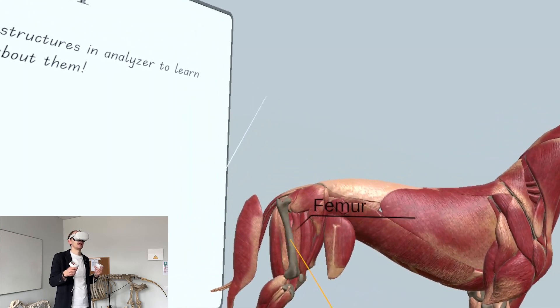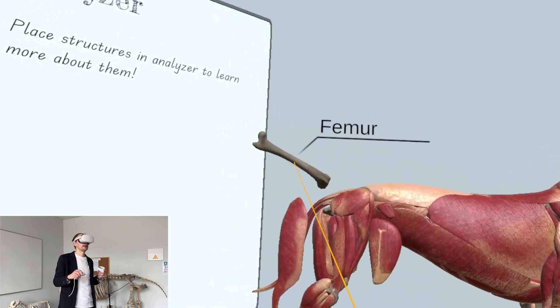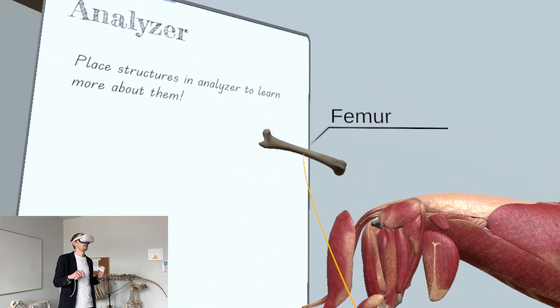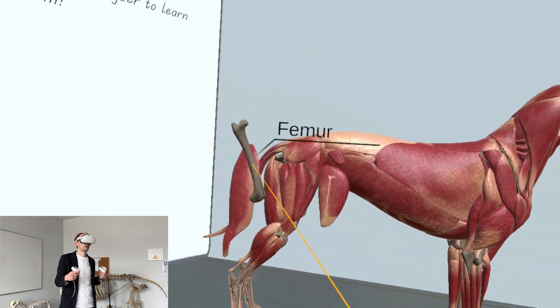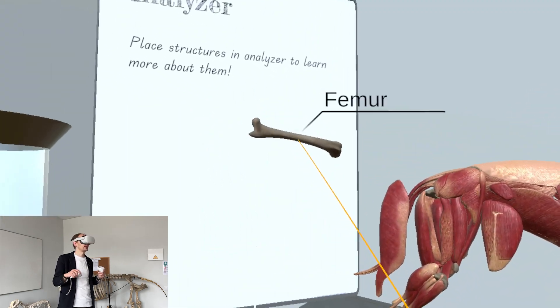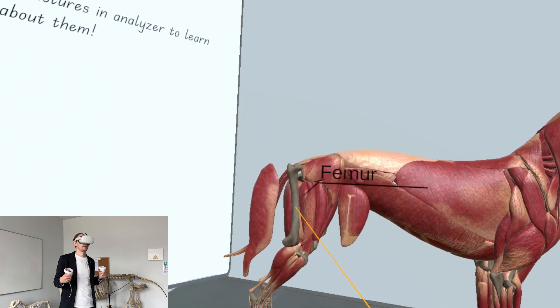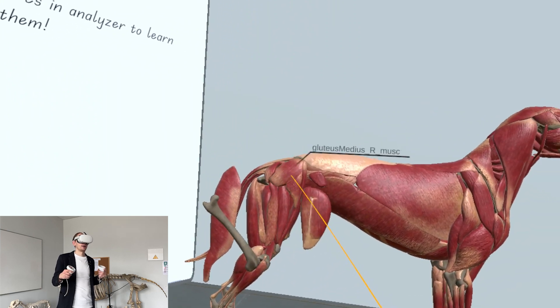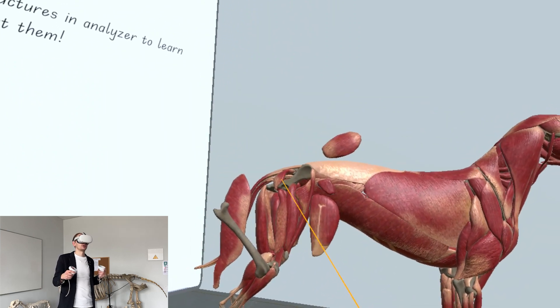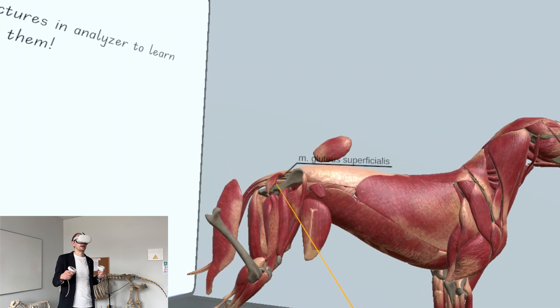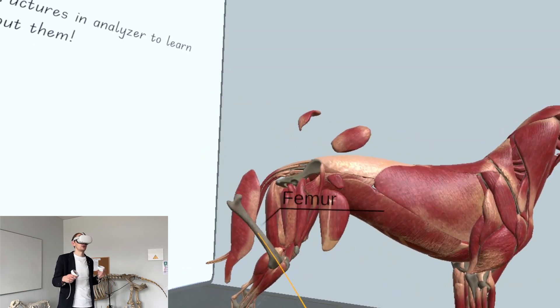Of course, in real life we won't be able to take the femur out of the animal, but here in VR we can do that to get better understanding. We can remove those muscles to see the hip in better quality.